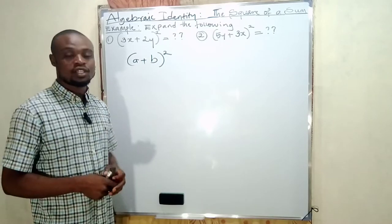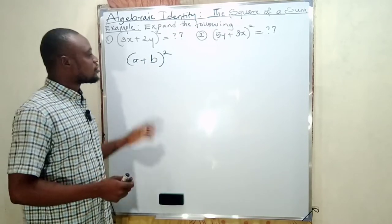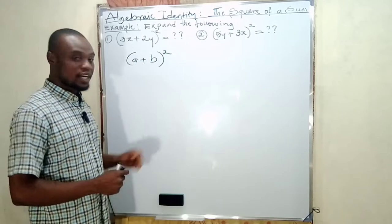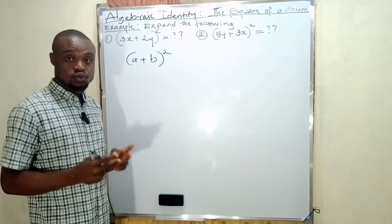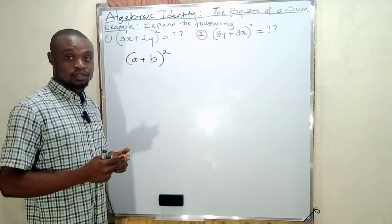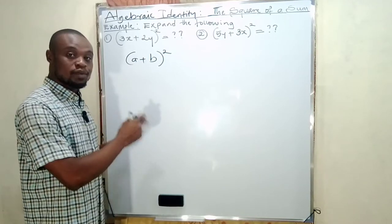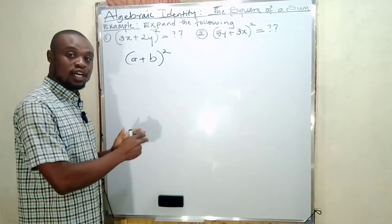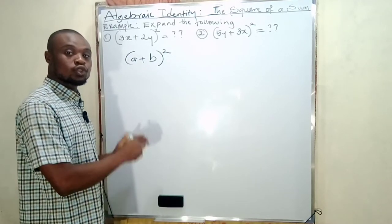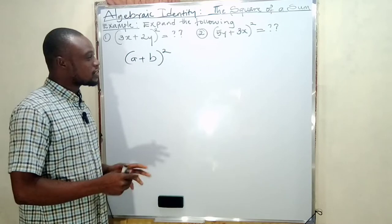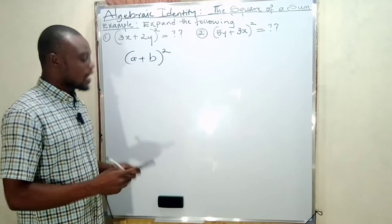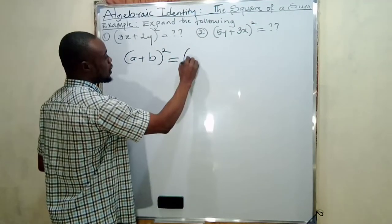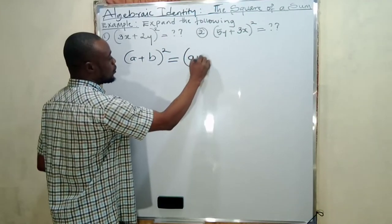How do you go about expanding it is what I want to explain today. It's very simple. The square at the top shows that this particular bracket is written twice. So if you want to expand this bracket, we write the first one and use it to multiply the second one. This is the first bracket: (a + b).